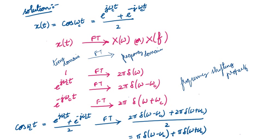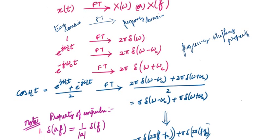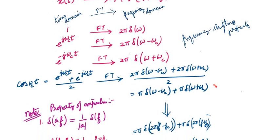Now cos(ωct) is a combination of these two. For e^(jωct) we have 2π·δ(ω − ωc), and for e^(-jωct) we have 2π·δ(ω + ωc), divided by 2. The 2s cancel, so the Fourier transform of cos(ωct) is π·δ(ω − ωc) + π·δ(ω + ωc).